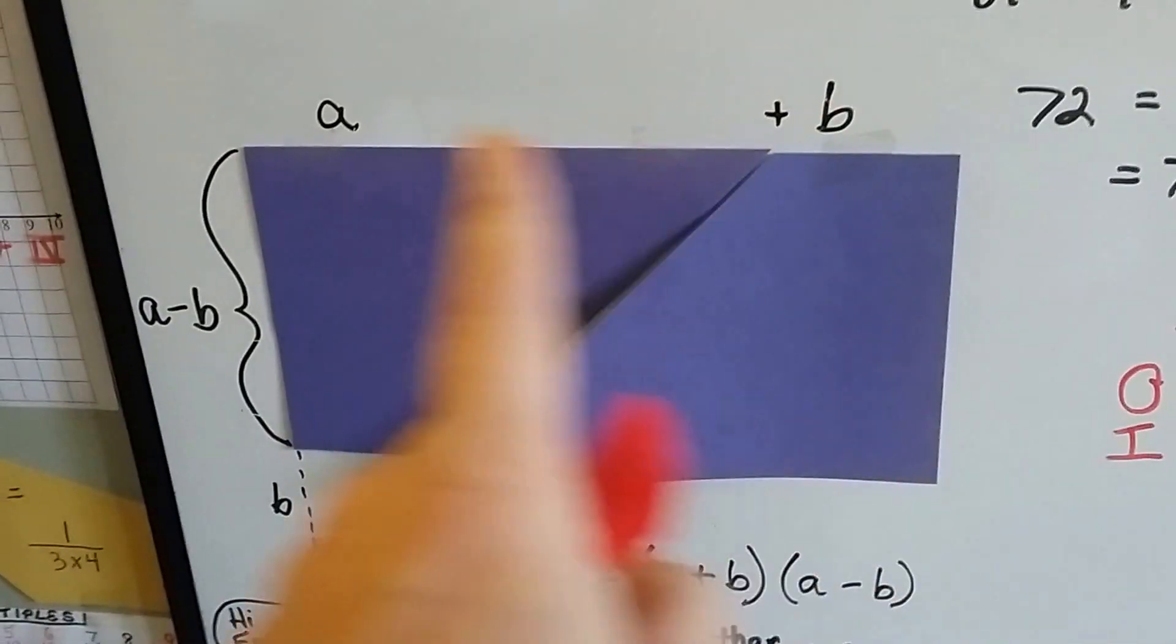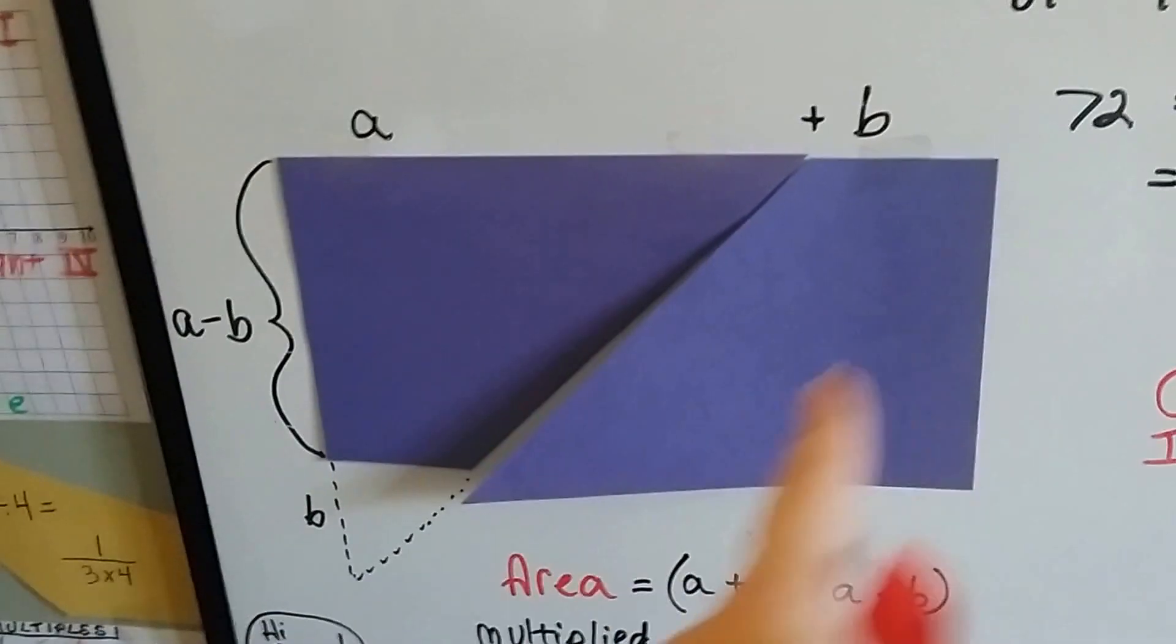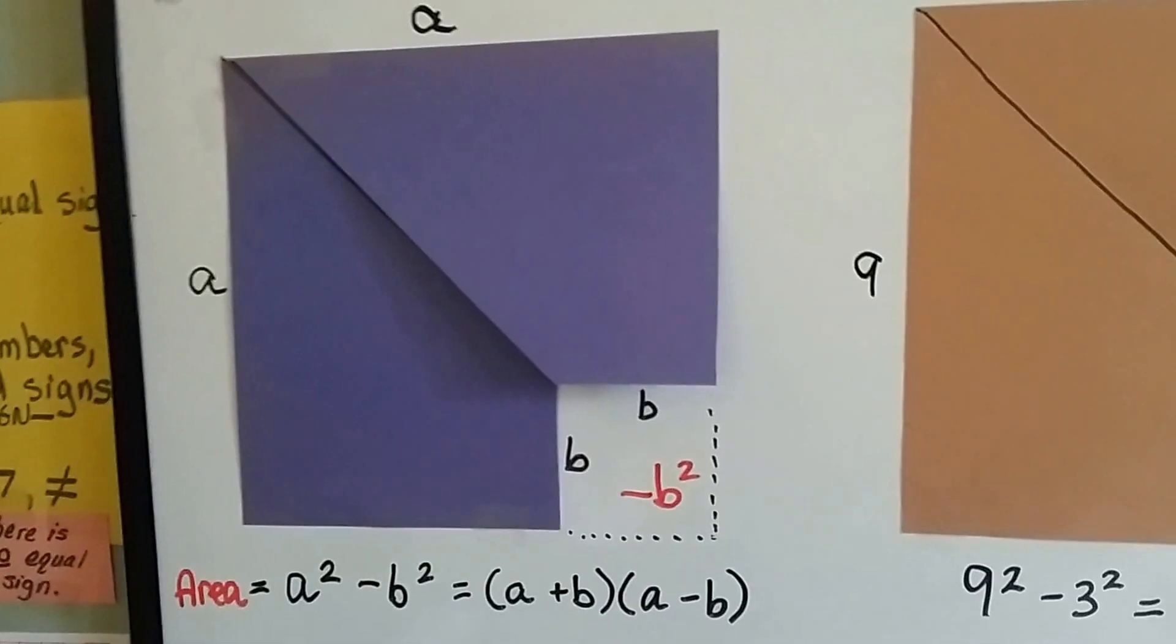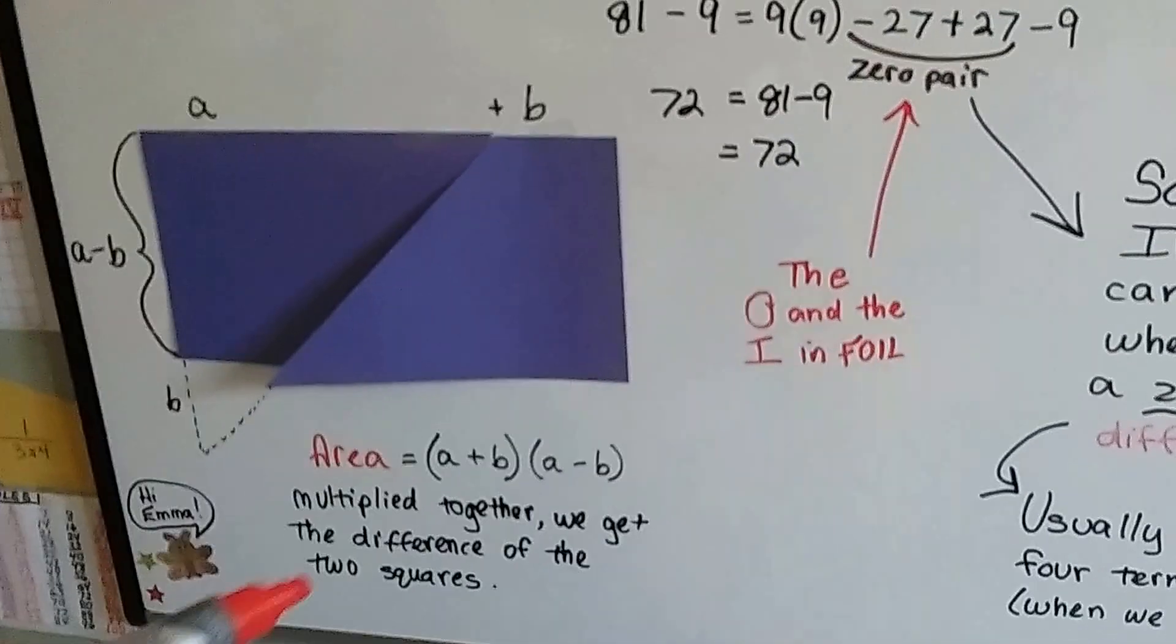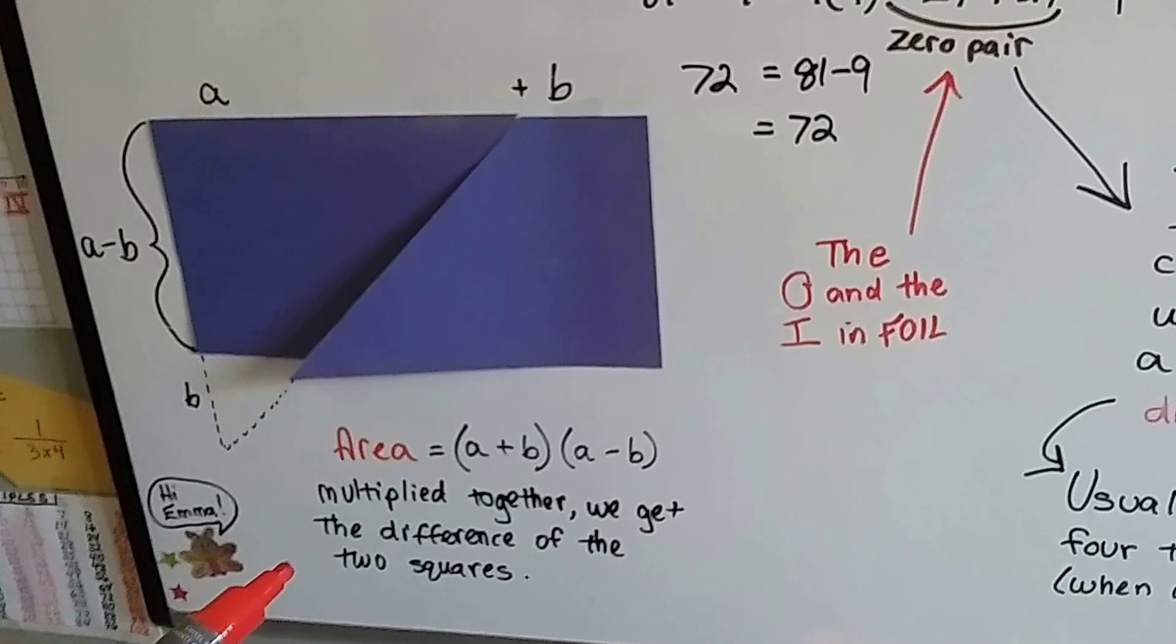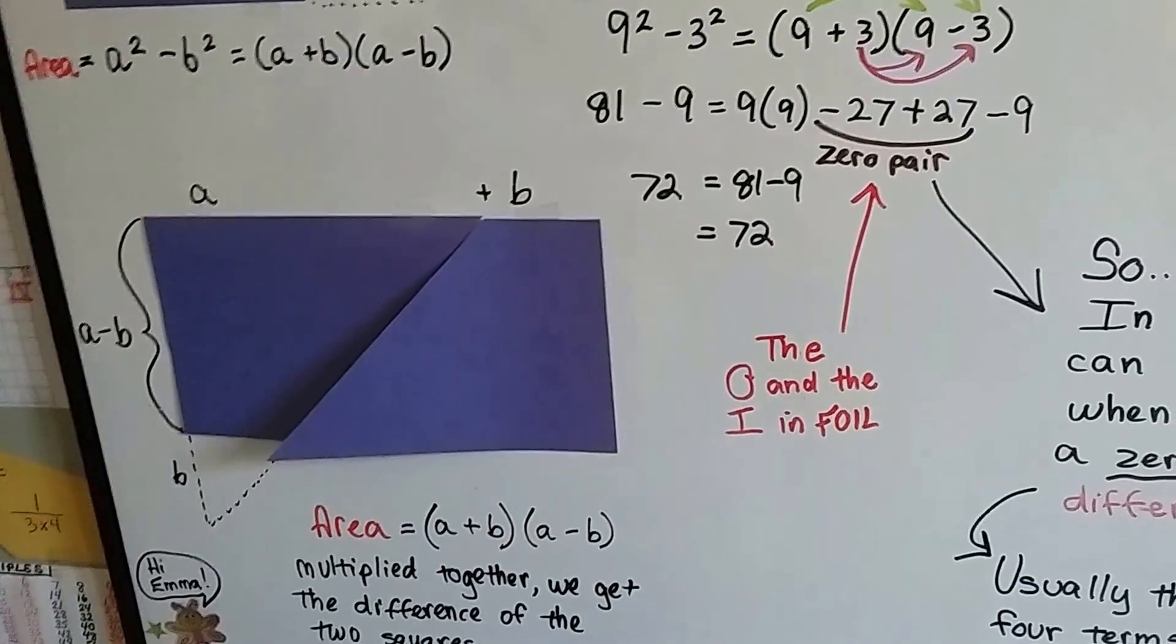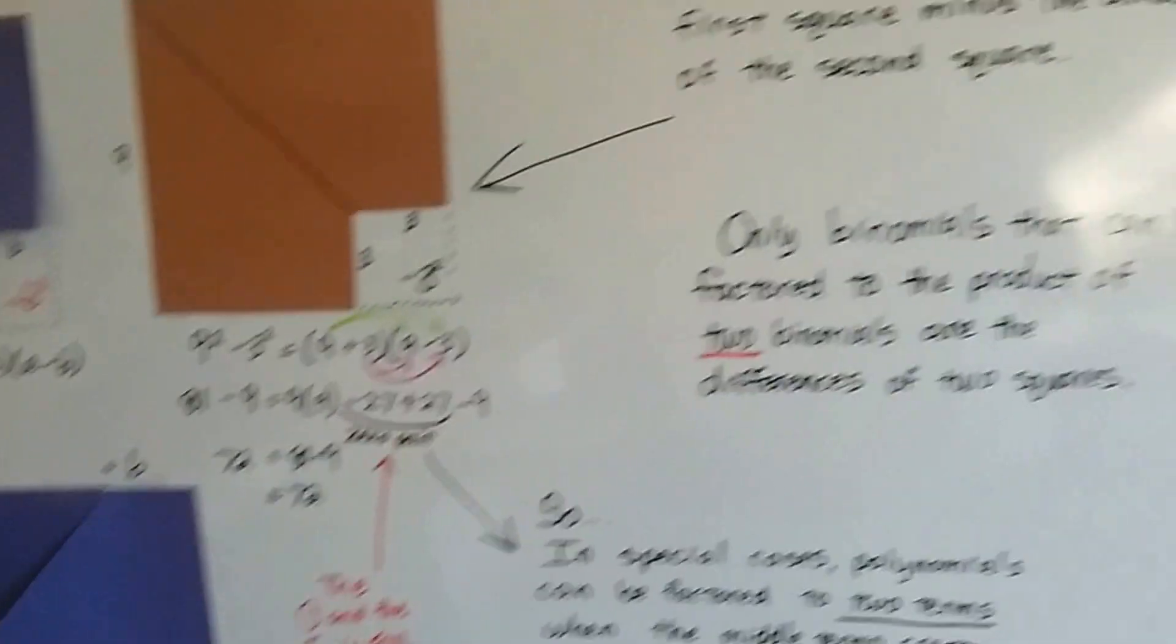And if we multiply the a plus b side to the a minus b side, we'll get the area of this entire thing, which is these two pieces. Isn't that something, isn't that crazy how that works? And it became a rectangle when we put it together like that. And we multiply the a plus b and the a minus b together, and we get the difference of the two squares as if it was the 72 units. 72 square inches. See how we did that?